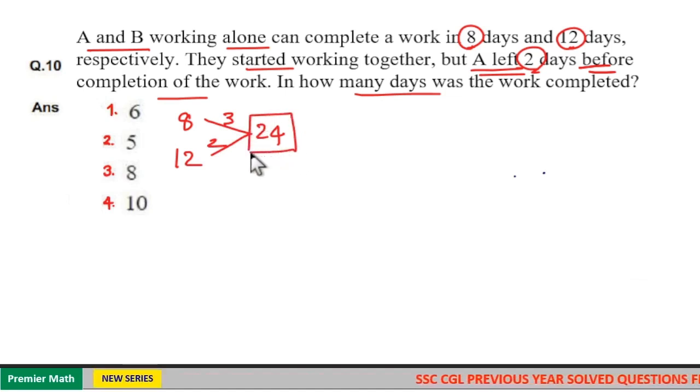Meaning of this diagram is 24 units is the total work. A can complete 3 units of work in a day, B can complete 2 units of work in a day.